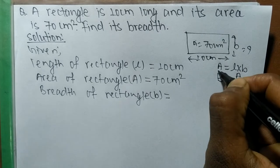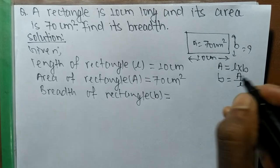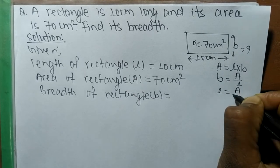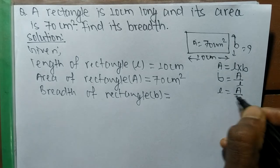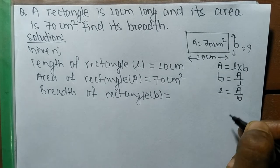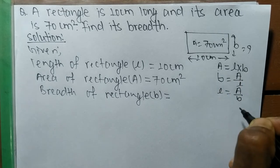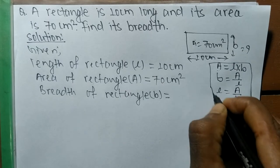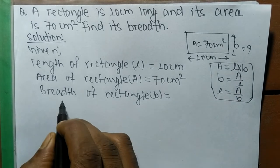This is because length is in multiplication, so when area moves to the other side it becomes division. In the same way, L is equal to A divided by B — length equals area divided by breadth — because breadth is also in multiplication, so area moves to the opposite side and becomes divided. These are the basic formulas of a rectangle.